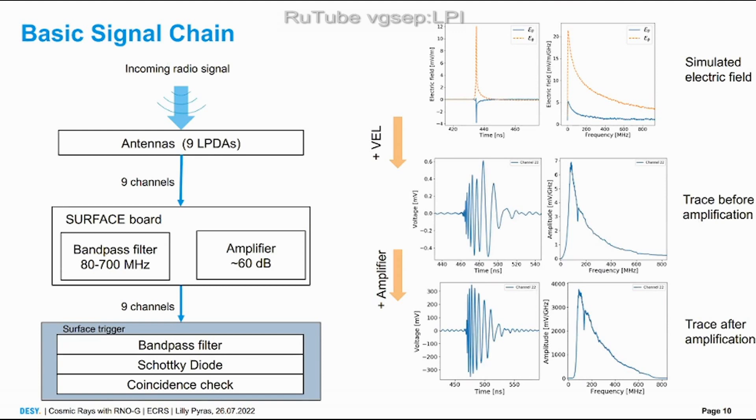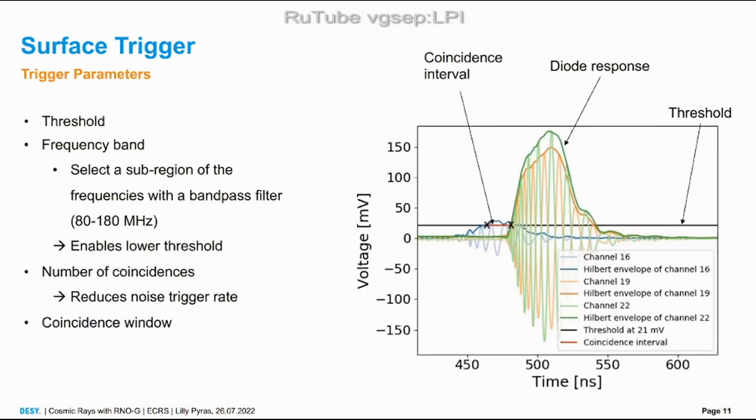This is quite technical. We have our incoming radio signal which is here like the simulated electric field. This goes through our antenna and the surface board which is basically an amplifier. So here we add the detector response and the amplifier together. It builds this trace in the time and frequency domain. You see there's a lot of group delay added because of all the hardware. On this trace we apply our trigger and it consists of a filter, a diode, and the coincidence check. It's a simple threshold trigger. We use a frequency band which is optimized for the signal so that we reduce noise and get to a lower threshold.